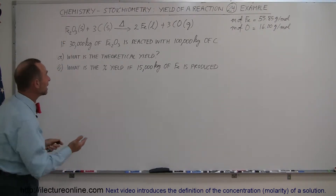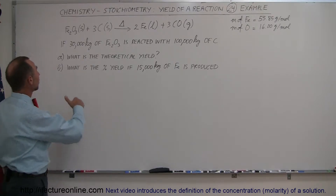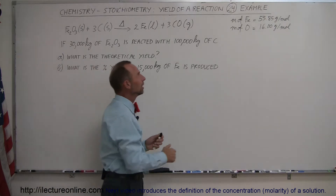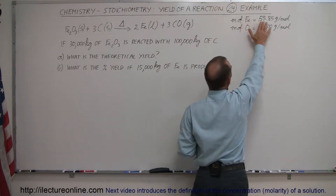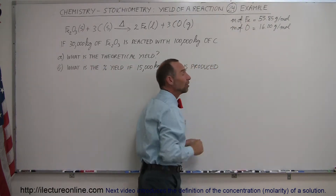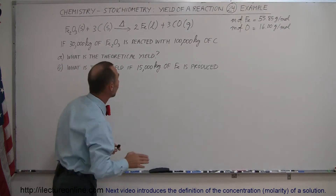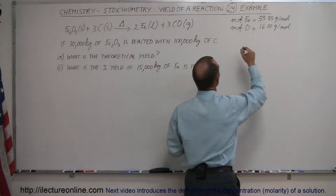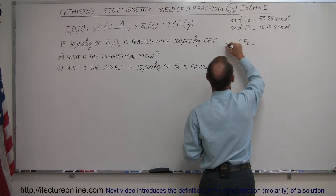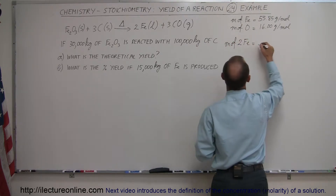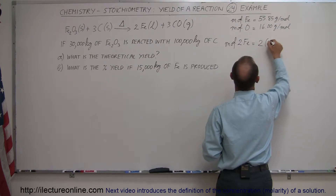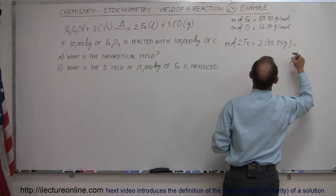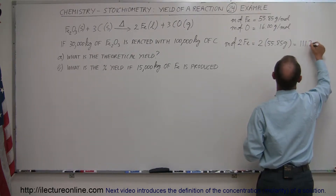For that we need the relative molar mass of iron oxide and iron by itself. The molar mass of iron is 55.85 grams. For one mole of iron oxide we have two iron atoms, so the mass of two irons is 2 × 55.85 grams, which equals 111.7 grams.